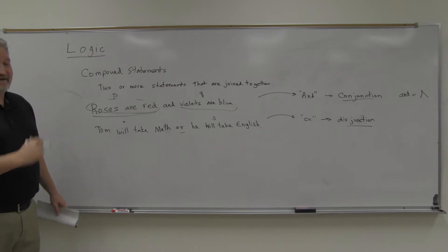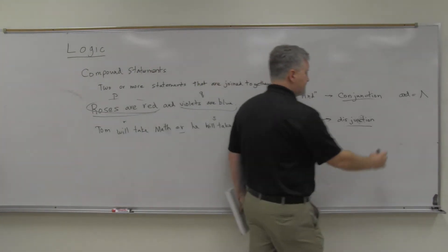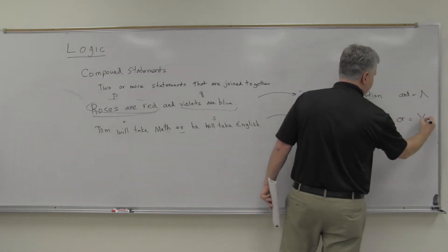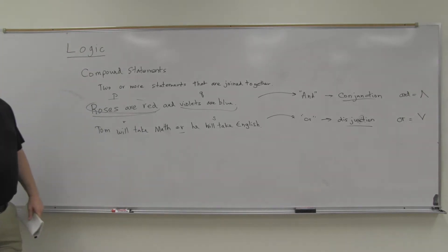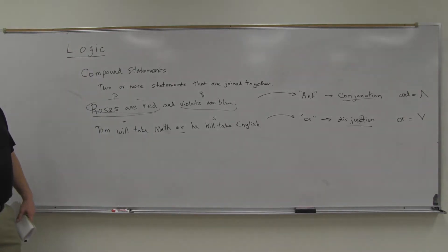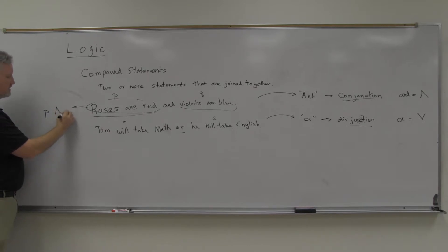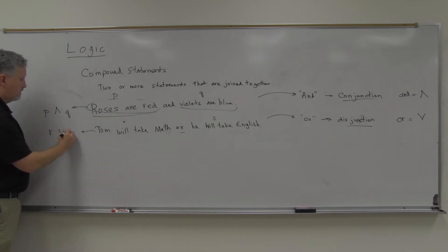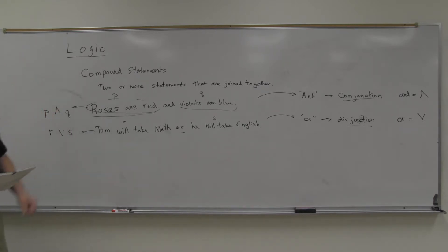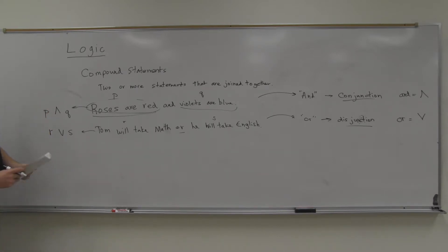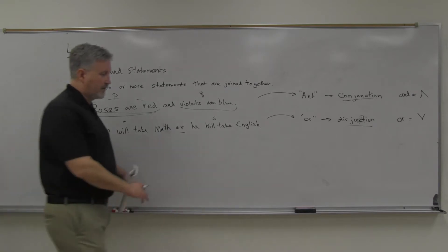So for 'roses are red and violets are blue,' if p is 'roses are red' and q is 'violets are blue,' we'd write that as p ∧ q. For 'Tom will take math or English,' naming those statements r and s, we'd write r ∨ s. That's our notation for 'and' and 'or' statements in logic.